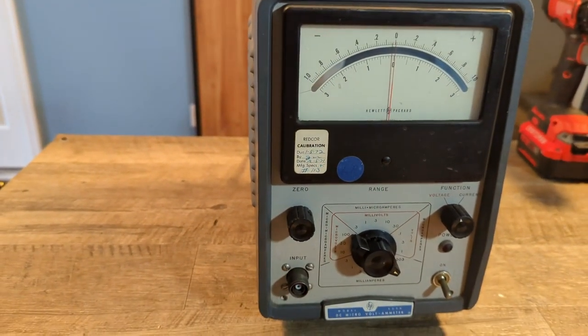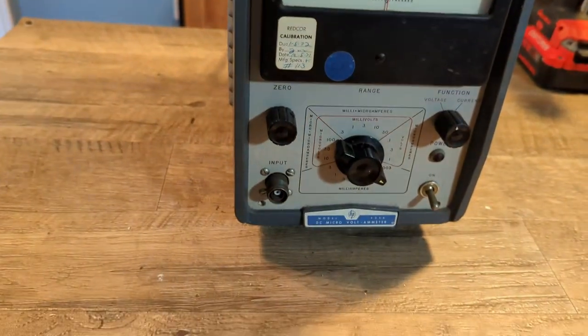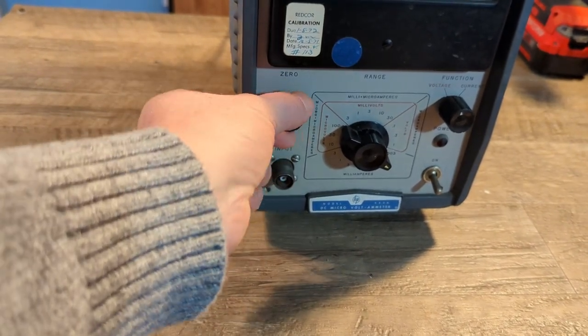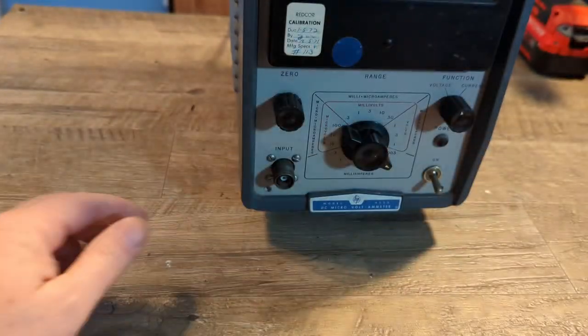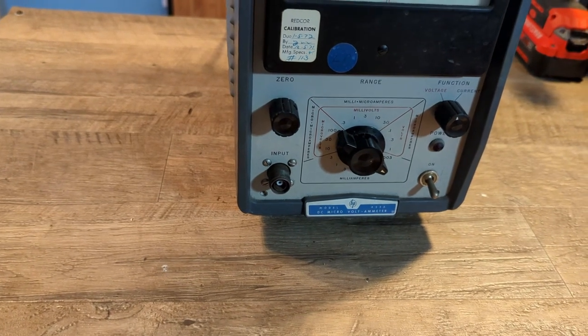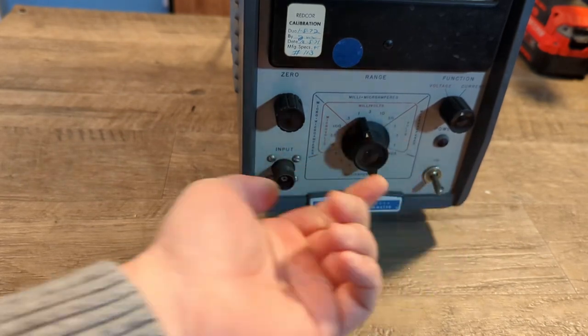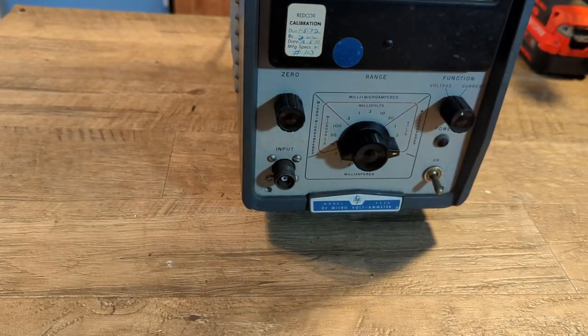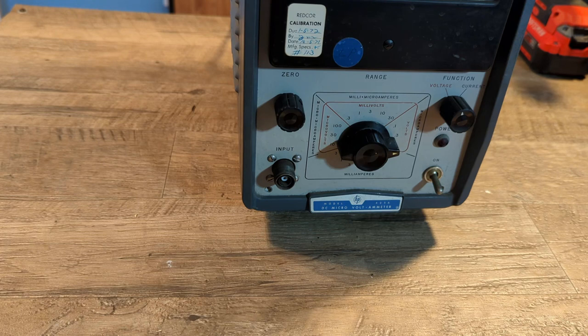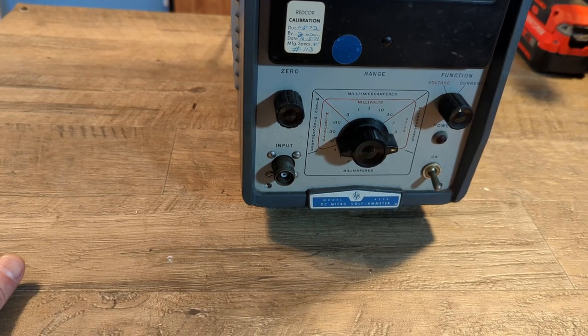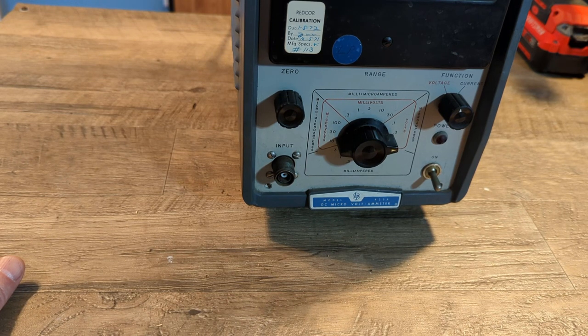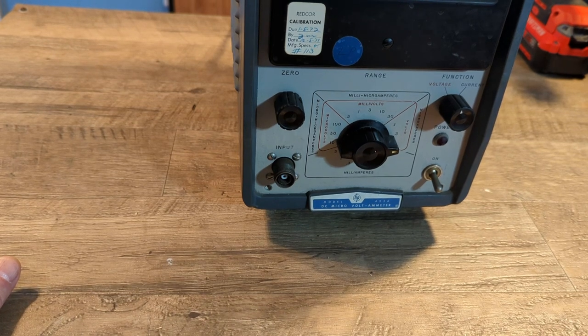So let's just look at the front here. On the front we have a zero potentiometer and a function switch for either current or voltage. And then you have your power switch and jewel lamp. And then you have all of your different ranges depending on what you're using it for - current or milliamps to microamps, millivolts, microamps, which would be picoamps, very very small amps, microvolts, volts, and on the bottom there's milliamps.